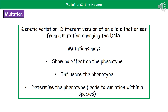As a result of these mutations, we can get genetic variation. When a mutation has taken place within the DNA, it has actually created a different version of an allele, which leads to greater variation within a population. If these mutations occur, there are three potential outcomes: the first is no effect on the phenotype whatsoever; the second is that it can have an influence on it; and the third is that it can actually determine the phenotype — and that's the one that leads to variation within a species.